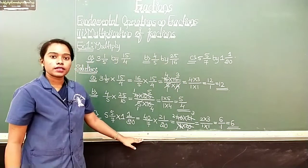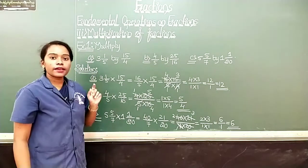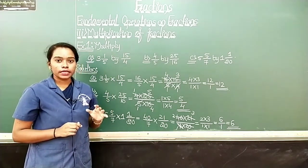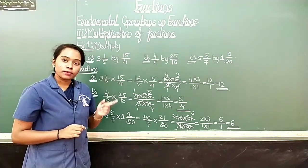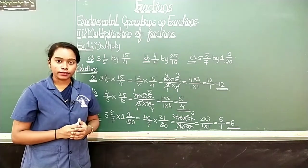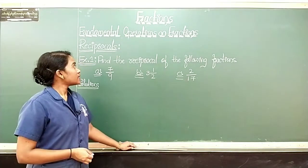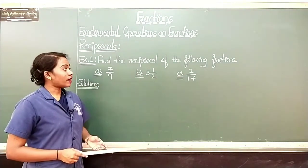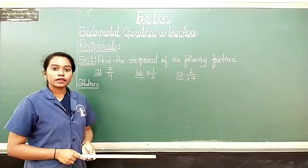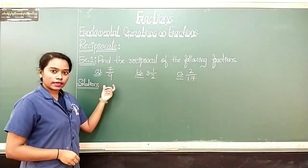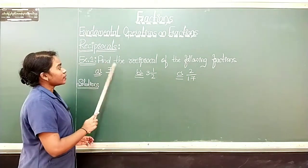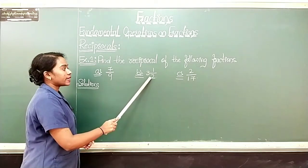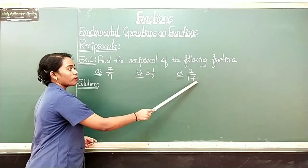This is our answer. So students, to multiply fractions we have to cancel out the common factors from the numerator and denominator of the fractions, and after that multiply to get the required product. The next concept is reciprocals. A fraction is given and you have to find the reciprocal of the given fraction. I will explain by solving an example. Find the reciprocal of the following fractions: first is 7/9, second is 3 1/2, and third is 2/17.